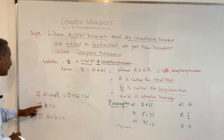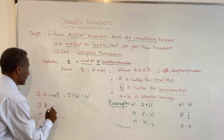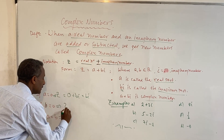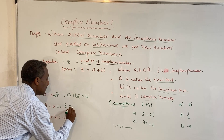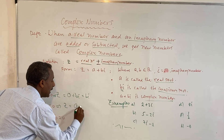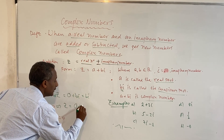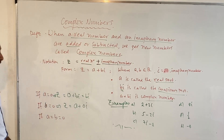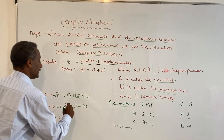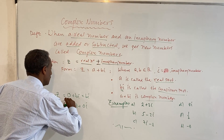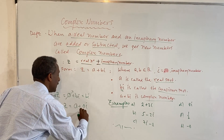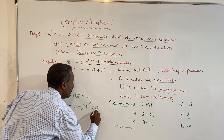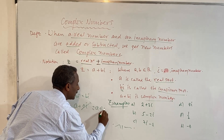What will happen if B is zero? We simply say Z is equal to A plus 0i, which means Z is equal to A. So the pure real part remains, and the result is a pure real number.